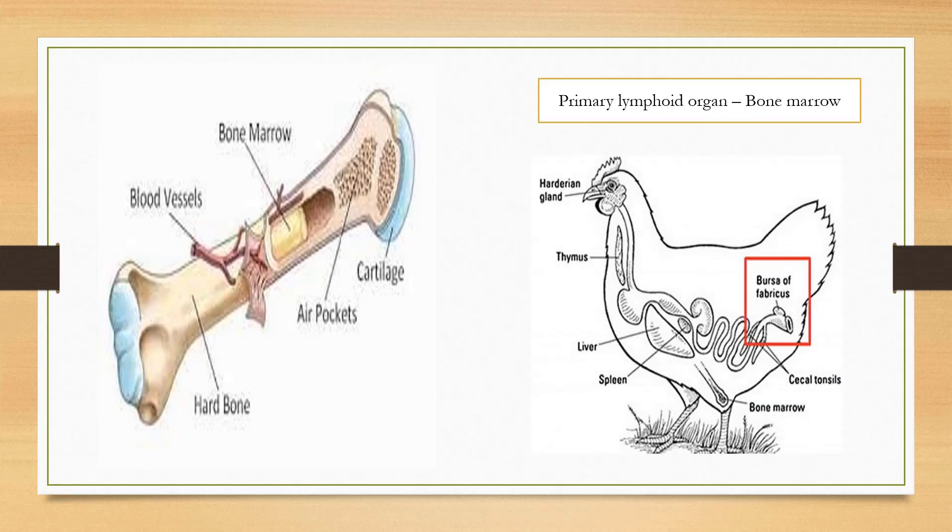In birds, B cells are formed and get matured in the bursa of Fabricius and lymphoid tissue associated with gut.